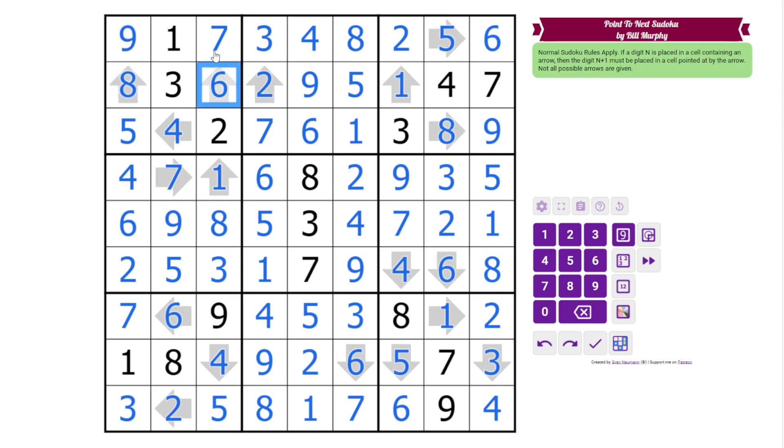So the 8 is pointing to the 9. The 6 is pointing to 7. 4 is pointing to 5. 2 is pointing to 3. 5 is pointing to 6. 1 is pointing to 2. 8 to 9. 6 to 7. 4 to 5 to 6. 3 to 4. 1 to 2. 6 to 7. 4 to 5. 2 to 3. 6 to 7. 7 to 8. 1 to 2. So that's all the arrows and we didn't get a notification that any of the Sudoku is wrong.